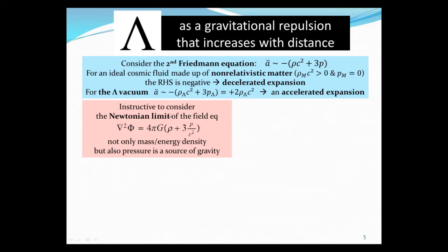It's useful to consider the Newtonian limit. For ordinary matter, you go to Newtonian limit, you just recover Newton's equation. But if the substance, the ideal gas for example, has both density and pressure, then the Newtonian limit turns out to be this, which really says not only mass energy, but also pressure is a source of gravity.